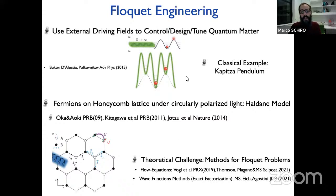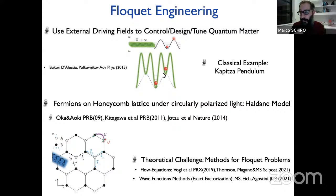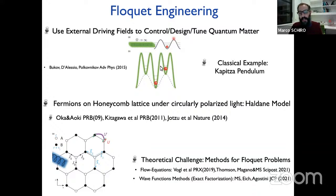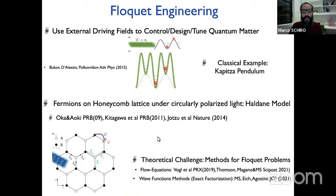Floquet engineering has been realized in various platforms. One example I particularly like is driving fermions with circularly polarized light: this circularly polarized light breaks time-reversal symmetry and allows creation of a non-trivial topological state — a Floquet topological insulator — even without a magnetic field. This is a really active field. It is also very challenging to develop techniques to solve the Floquet problem, so a big part of our effort goes into developing new methods, including flow equation methods for disordered systems and wave function methods based on exact factorization for electron-phonon or electron-nuclear problems.